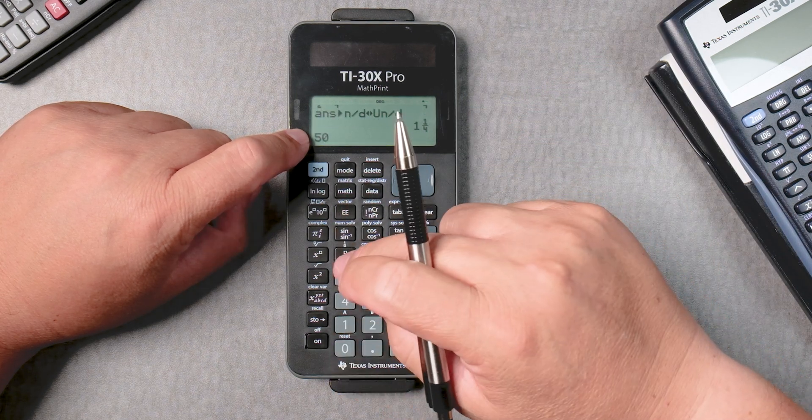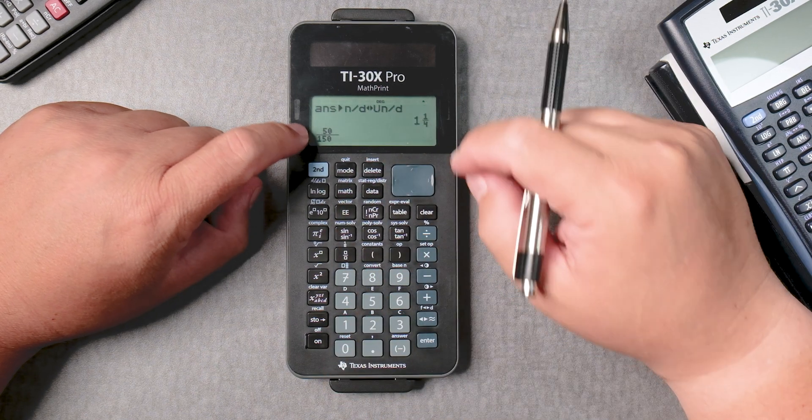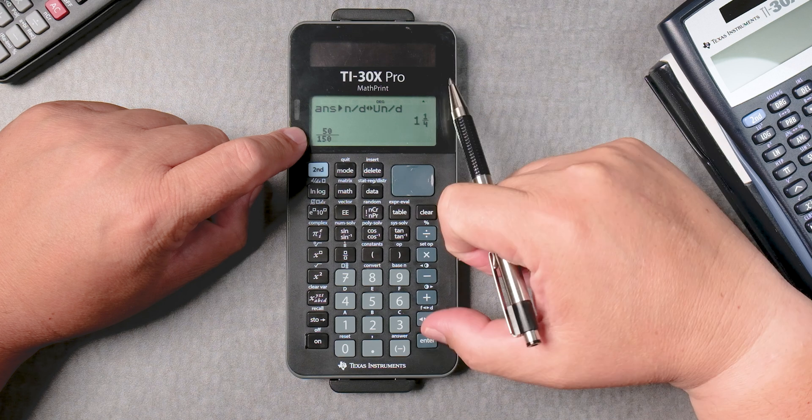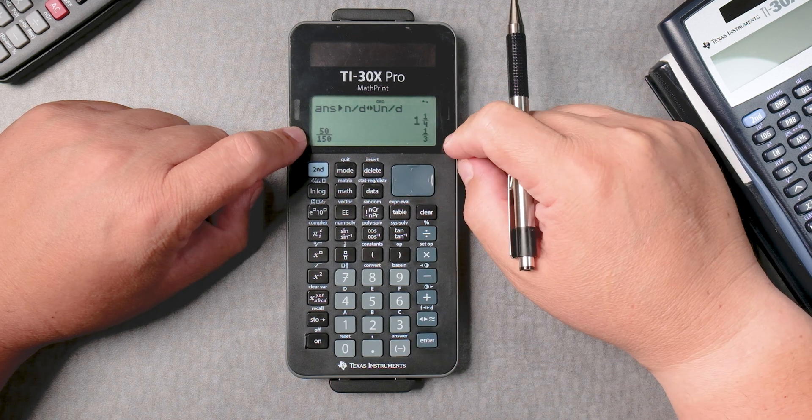Let's say you want to do 50 over 150, and you want to reduce this fraction automatically. You can do that. Just press enter, it gives you a third.